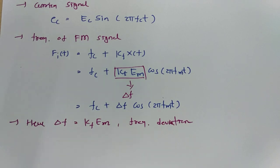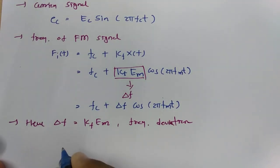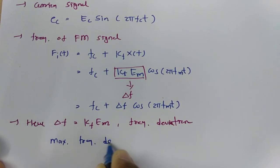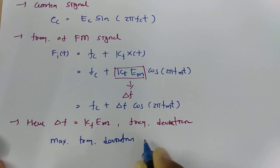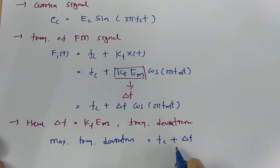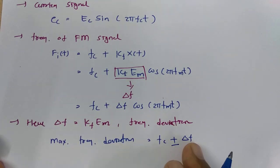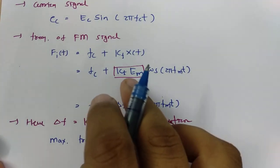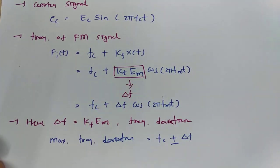Now, the maximum frequency deviation will be Fc plus delta f, and the minimum frequency deviation will be Fc minus delta f. Delta f equals Kf into Em, where Kf is the frequency modulation sensitivity and Em is the amplitude of the modulating signal.